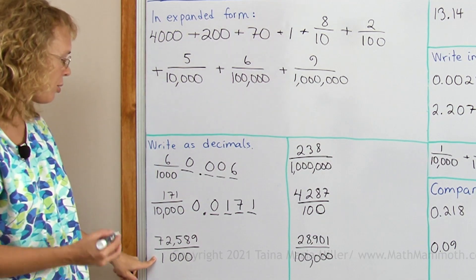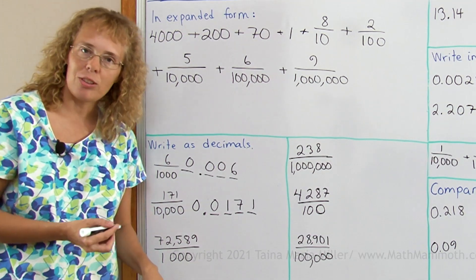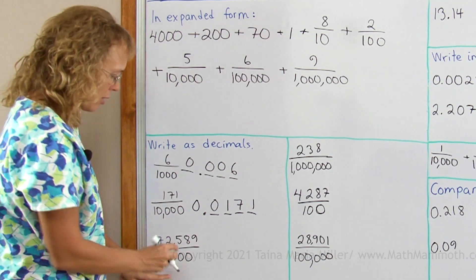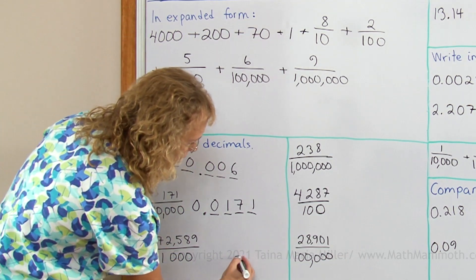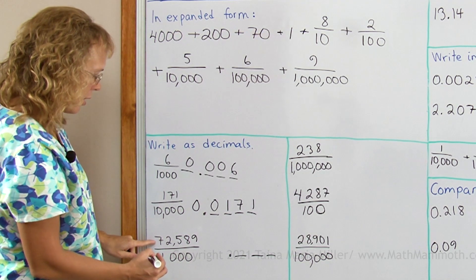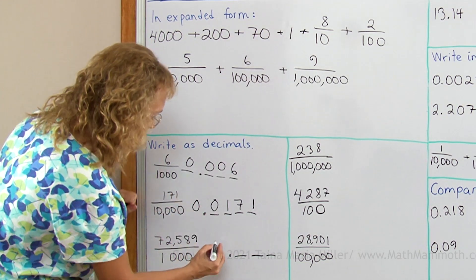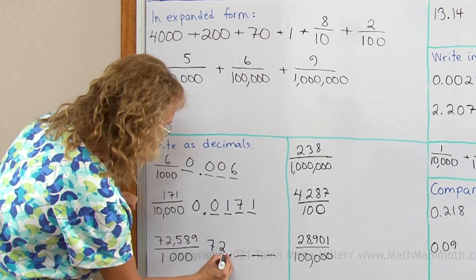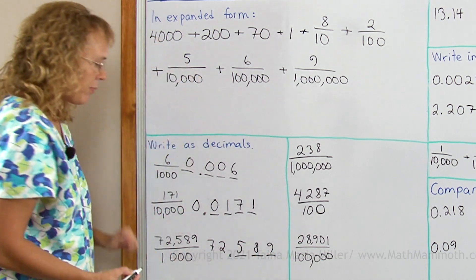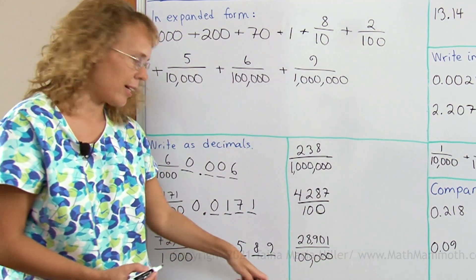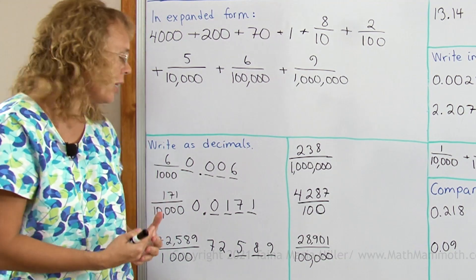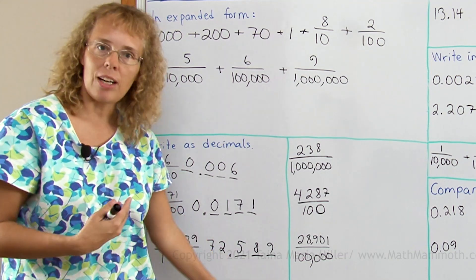Over here: seventy-two thousand five hundred and eighty-nine thousandths. The same principle applies — here is a thousand, three zeros, so three decimal digits. But now this doesn't just fit there; it will have seventy-two here and then five, eight, nine — like that: seventy-two point five eight nine. Or actually this is the whole number seventy-two and five hundred and eighty-nine thousandths.